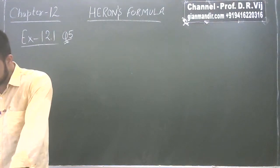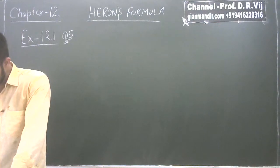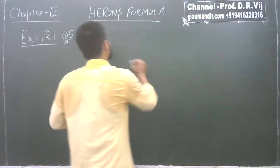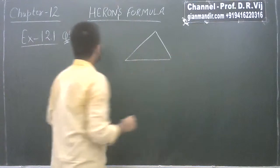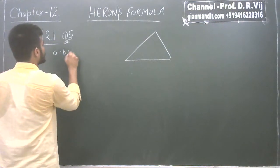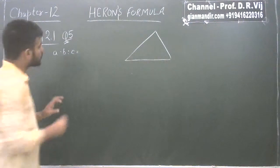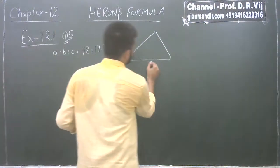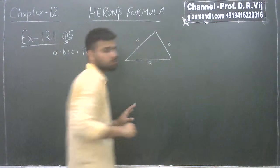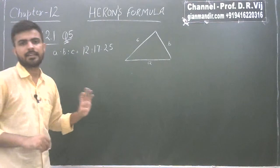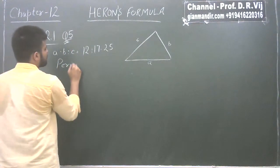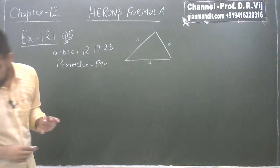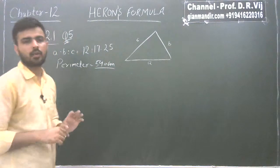Question number 5 says: sides of a triangle are in the ratio 12 : 17 : 25 and its perimeter is 540 centimeter — find its area. The sides are in ratio A : B : C = 12 : 17 : 25, and the perimeter of the triangle is 540 centimeter. We have to calculate its area, but first we need to find the actual sides.